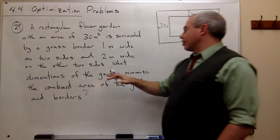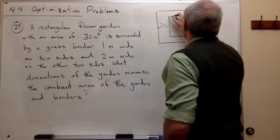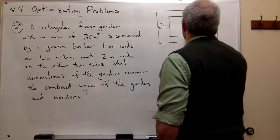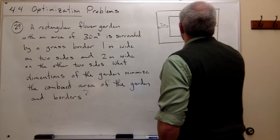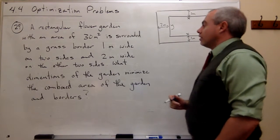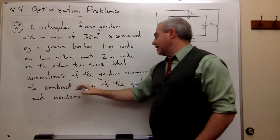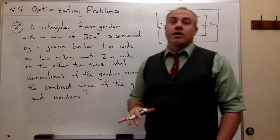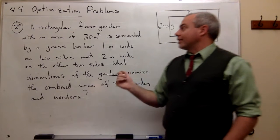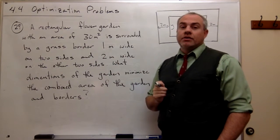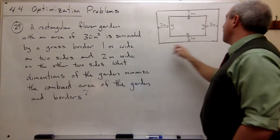So what dimensions of the garden—in other words, this garden has some dimension to it. One side of this garden we could call x, and the other side we could call y. So this is also x, this is also y. And what dimensions of the garden minimize the combined area of the garden and the borders? We're not trying to minimize the area of the garden. We know what the area of the garden is—it's 30 meters squared. What we're trying to do is minimize the area of the garden plus borders.